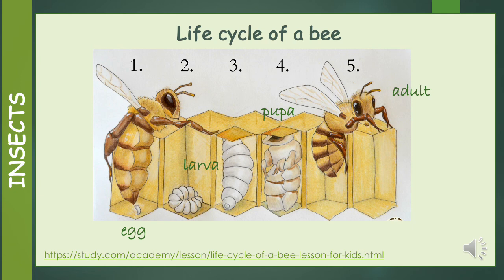Here is a visual representation of the life cycle of a bee. We start with an egg that hatches into a larva. Once the larvae is fully grown, it seals itself into a cocoon and enters the pupa stage. In the pupa stage, the bee starts to develop wings, eyes and arms. And then the bee emerges as a fully grown adult.